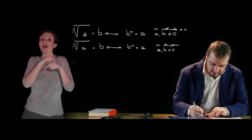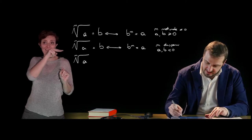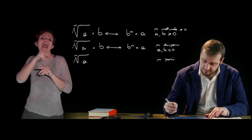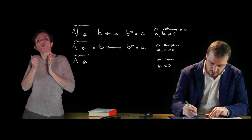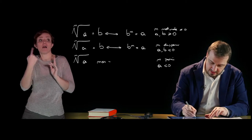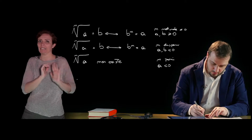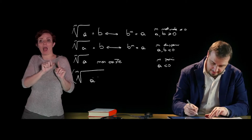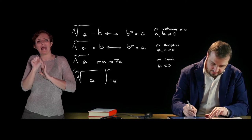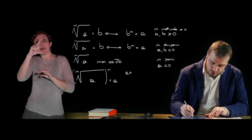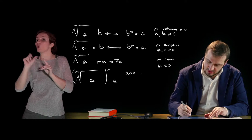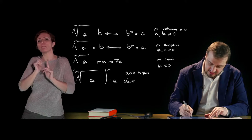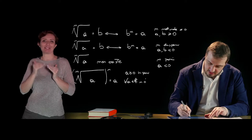If instead the nth root of a equals b, with n an odd natural number and a less than zero — and therefore b also less than zero — this expression is still valid. It is not valid, however, if n is even and a is a negative quantity; in that case this radical does not exist. In summary, the nth root of a raised to the power n equals a for a ≥ 0 when n is even, and for any real a when n is odd.